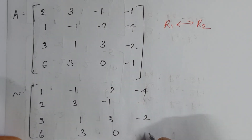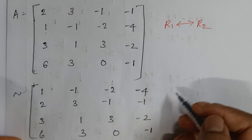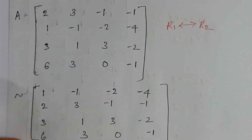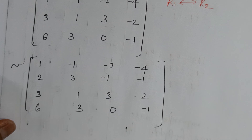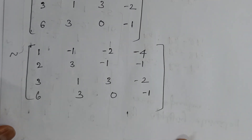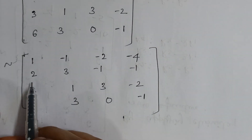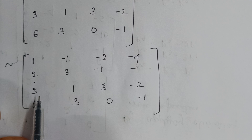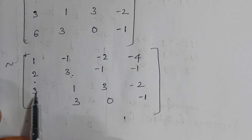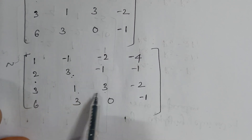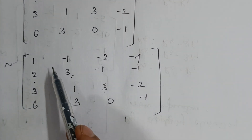Now I need to make the elements below the leading 1 in the first column into zeros — so I need zeros in rows 2, 3, and 4 of the first column.